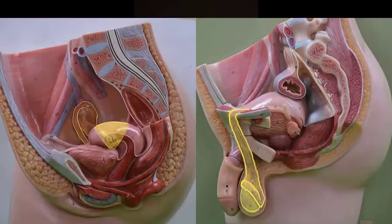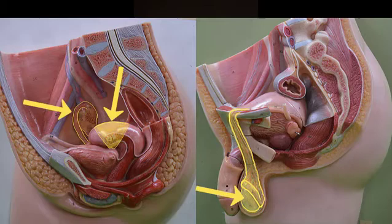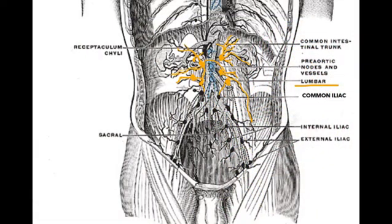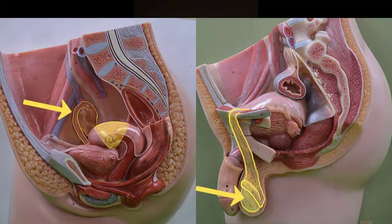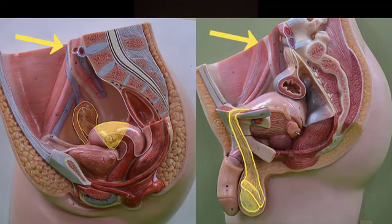An exception to this pattern worth noting: lymph from the testes and ovaries, as well as the uterine tube and fundus of the uterus, takes a direct route back to the lumbar nodes rather than passing through the iliac nodes. This makes perfect sense when you consider that the embryological origins of the gonads were within the abdomen. The gonads also retain their abdominal blood supply, and lymph has a tendency to follow blood.